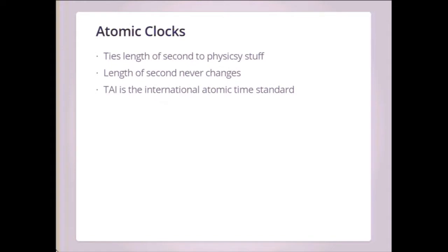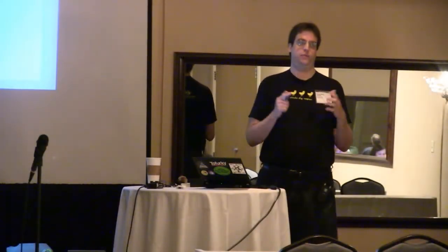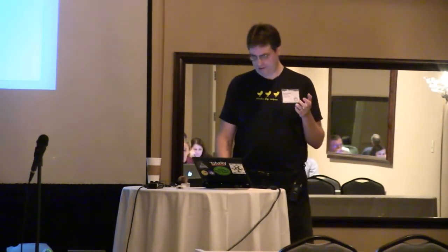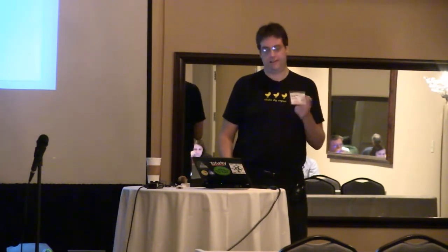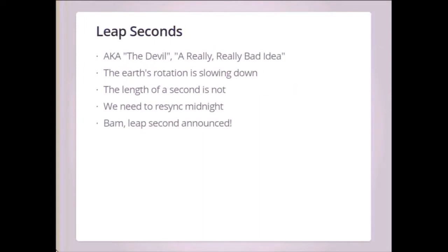There's this thing called atomic clocks. That's a way of measuring the length of a second based on something about physics that I don't understand — I majored in music. They're like atoms, vibrations, decay, cesium, something — all I know is it's very accurate. The length of a second never changes when measured by an atomic clock. TAI — Temps Atomique Internationale — is the international atomic science standard that everybody has agreed to use.